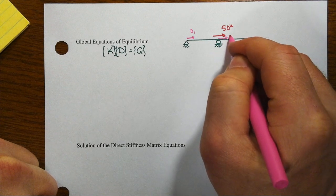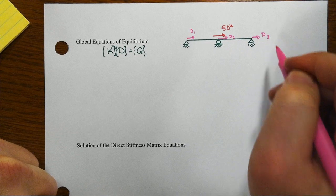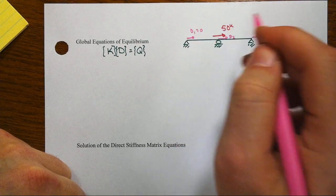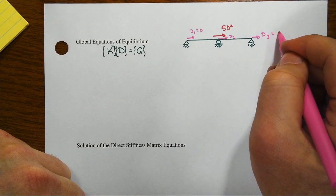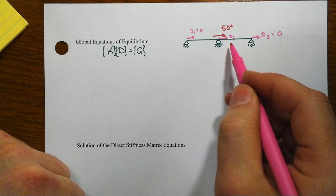We've got degree of freedom 1 here at the left, degree of freedom 2 in the middle, and degree of freedom 3 at the end. Given the support conditions, we know that D1 equals zero and D3 equals zero, but D2 is not known.